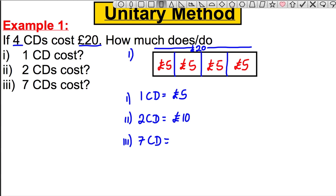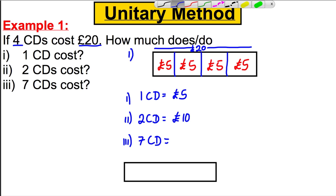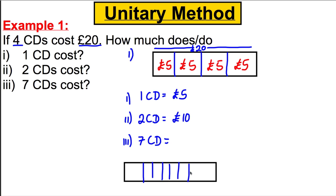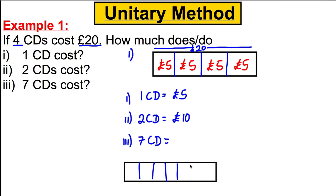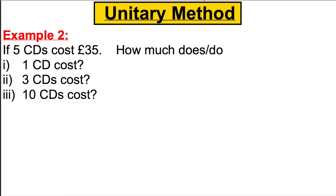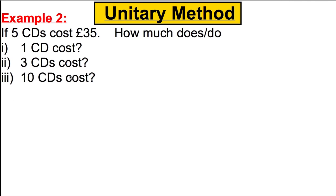And what are seven CDs? Well, seven CDs must be seven boxes. If you're struggling, you can draw a little picture and divide it into seven boxes: five, ten, fifteen, twenty, twenty-five, thirty, thirty-five. So clearly it's thirty-five pounds for seven CDs, and we're done — that's how we do those type of questions.